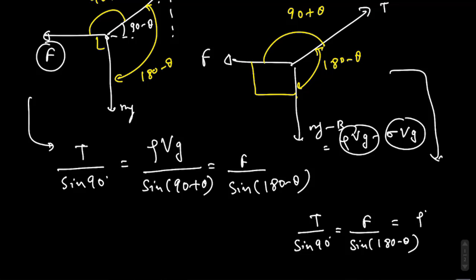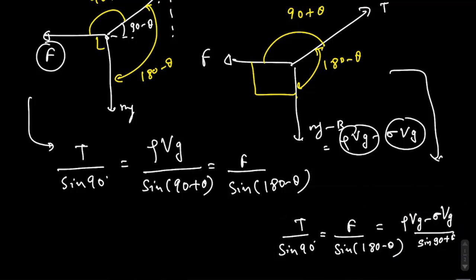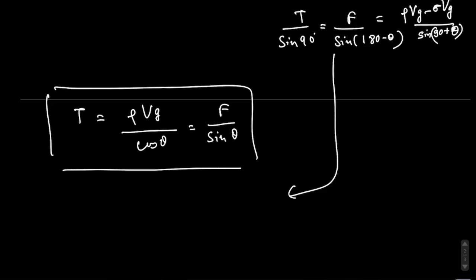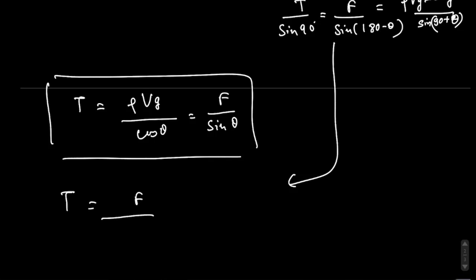ρVg minus σVg divided by sin 90 plus θ. So T equals to ρVg divided by cos θ equals to F by sin θ. This is the first and second equation. T equals to F by sin θ equals to ρ minus σ times Vg by cos θ.